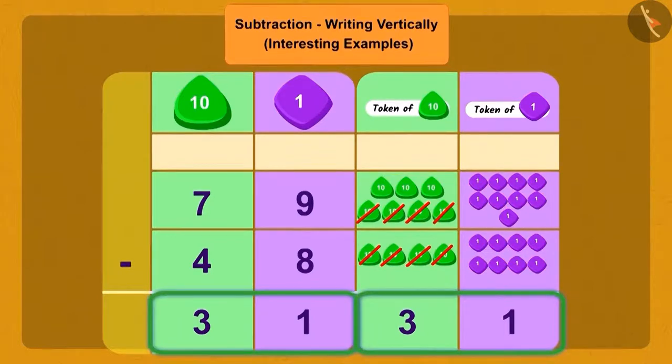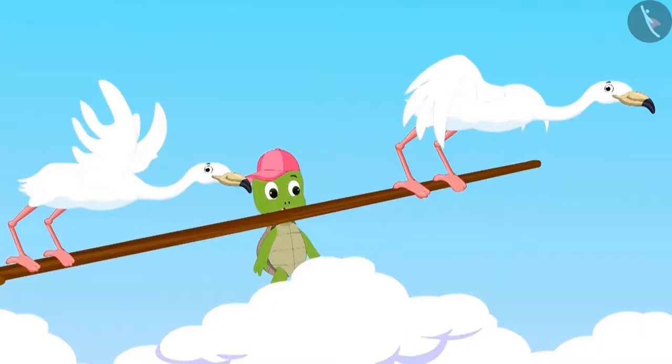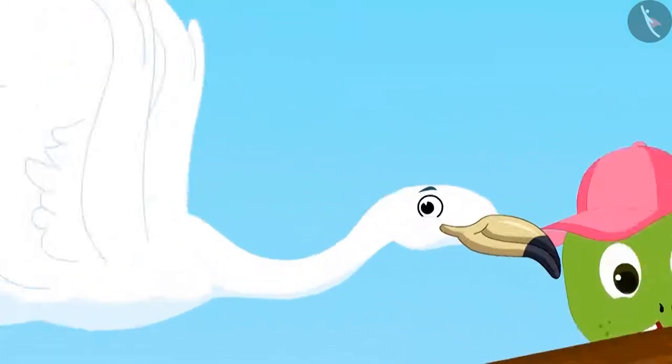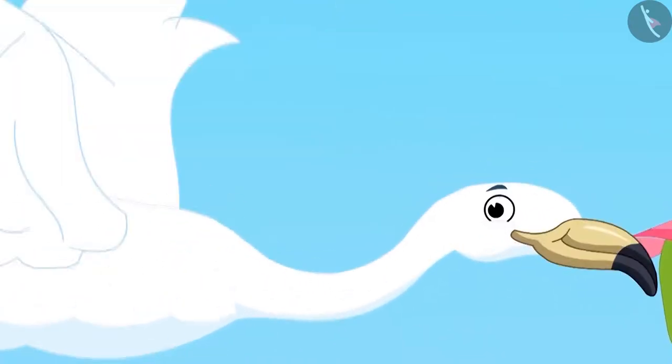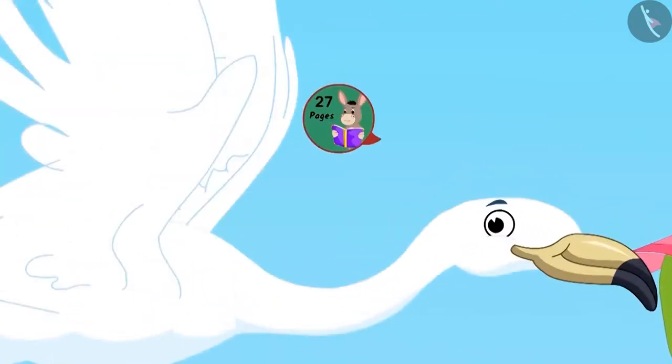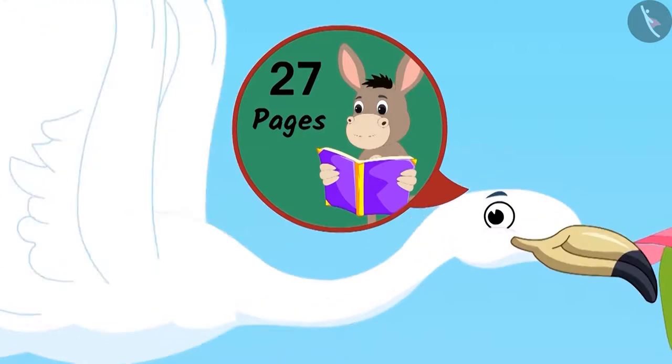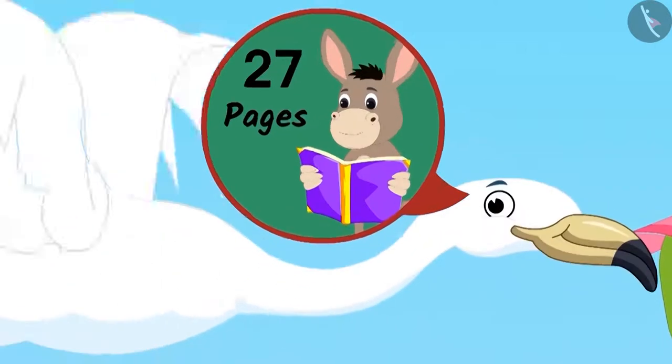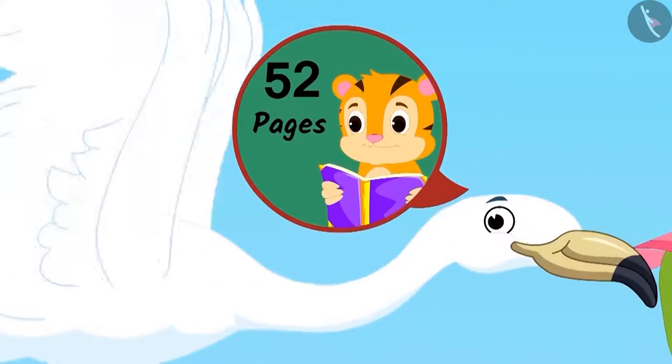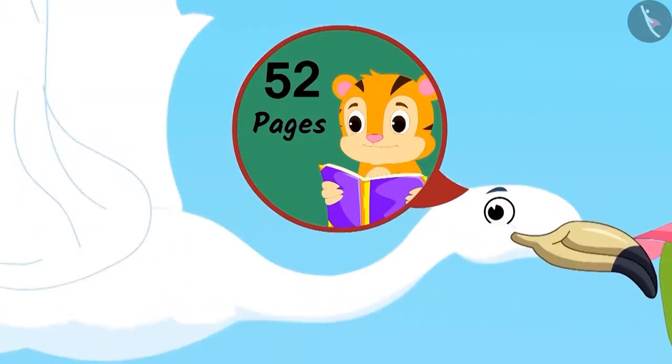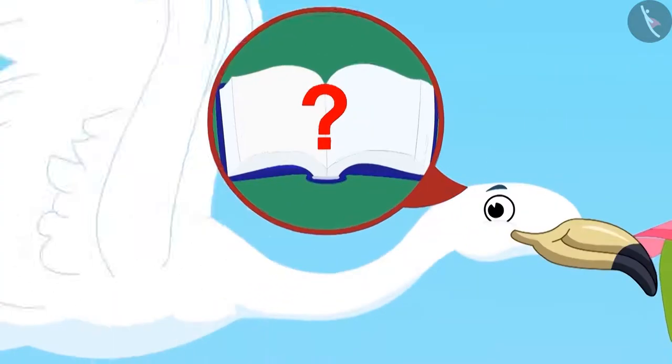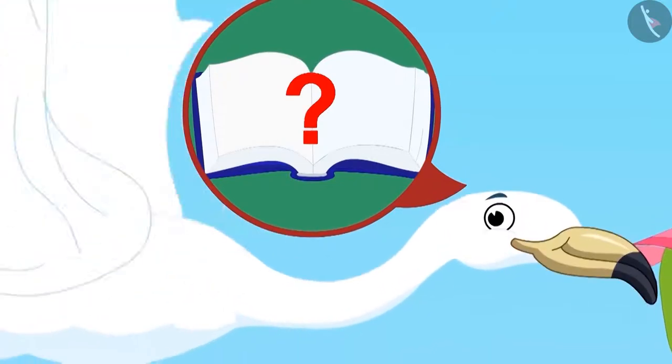Well done children! Both the bird and you have answered it correctly. Now, it was the turn of the second bird. This was the second puzzle. If Bholar read 27 pages of a book and Shere Khan read 52 pages of the same book, then can you tell me who read more pages and by how many?